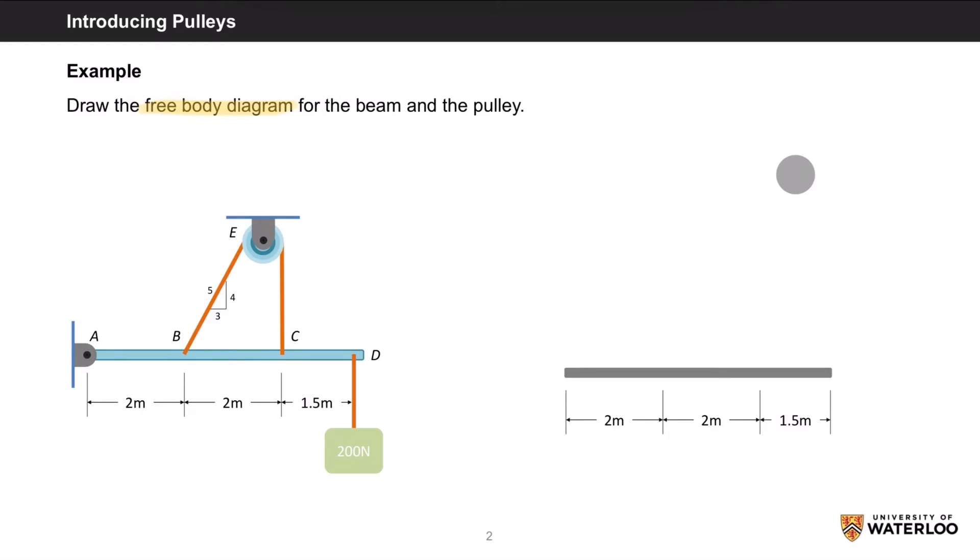Let's start with the most obvious forces, which are on the beam. We have the support reactions at A, which will be AX and AY, since it is a pin connection. We also have the 200N load at D.